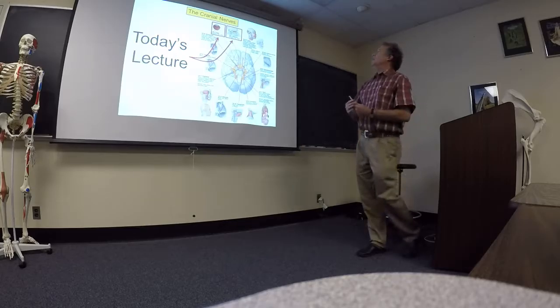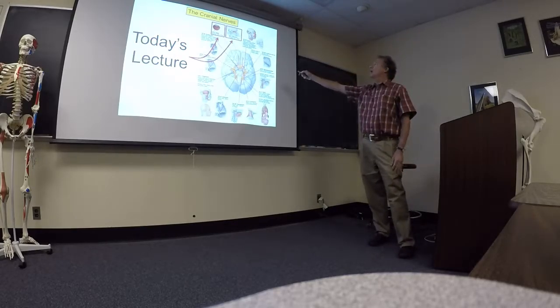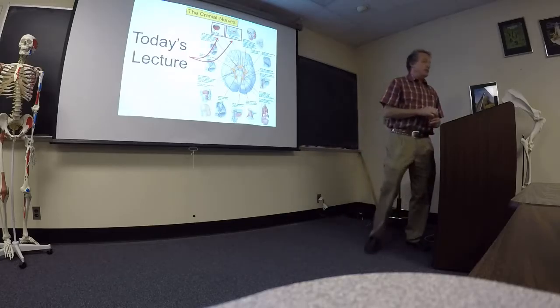Okay. Today, we're talking about one and two. Number one, the olfactory nerve, which is special sensory, which is smell. And the optic nerve, which is also special sensory, which is vision.